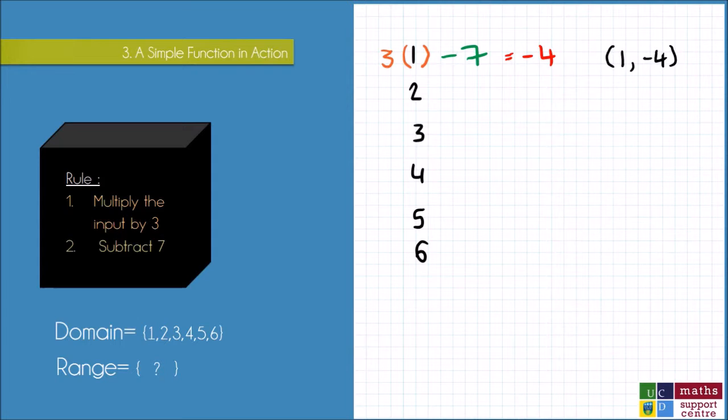Moving on to my second input then, I'm multiplying the 2 by 3, and then subtracting 7. So 2 times 3 is 6, take away 7, gives me minus 1, so my pair is 2, minus 1.